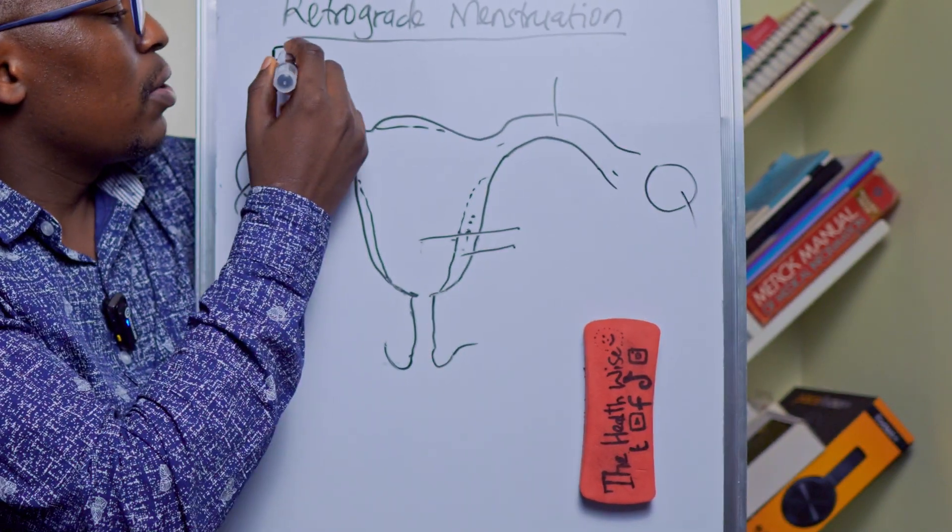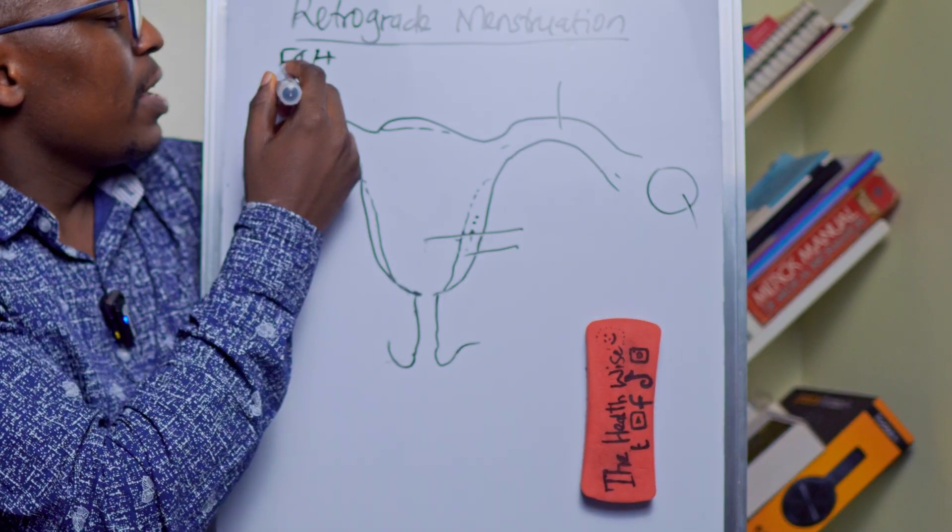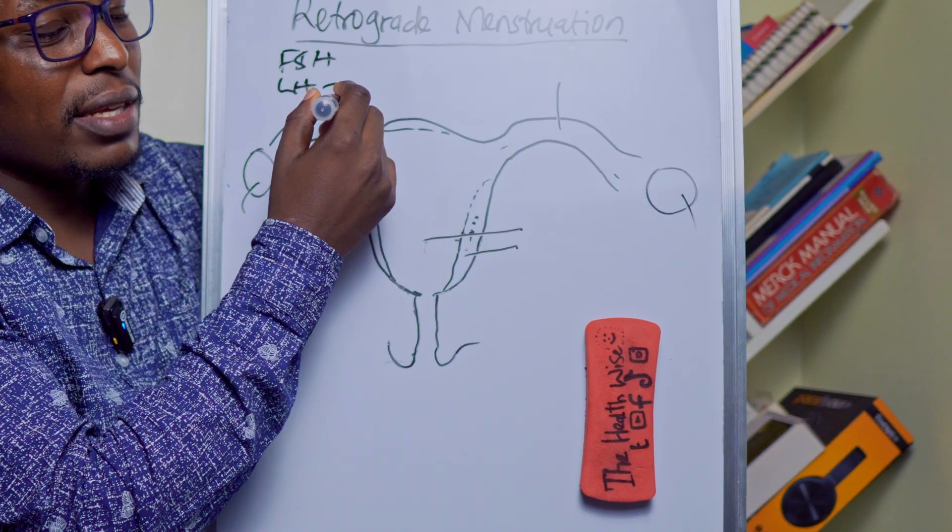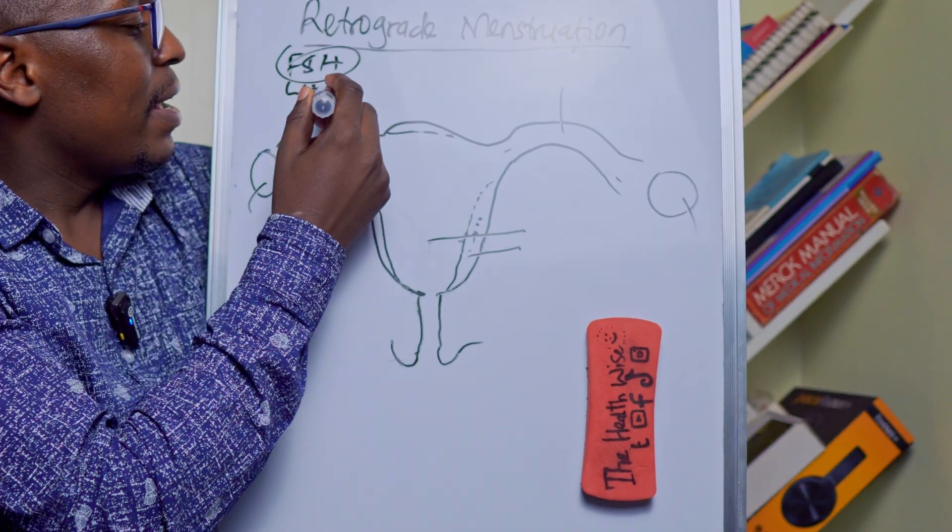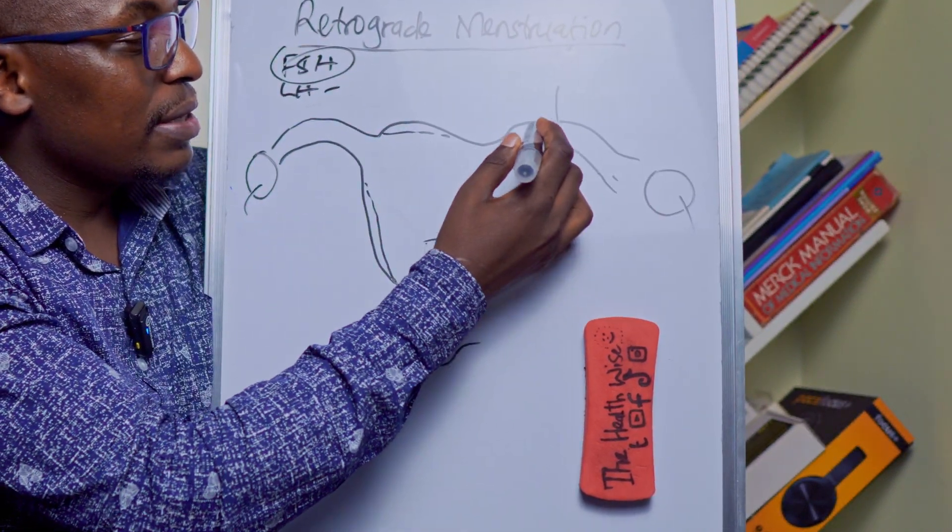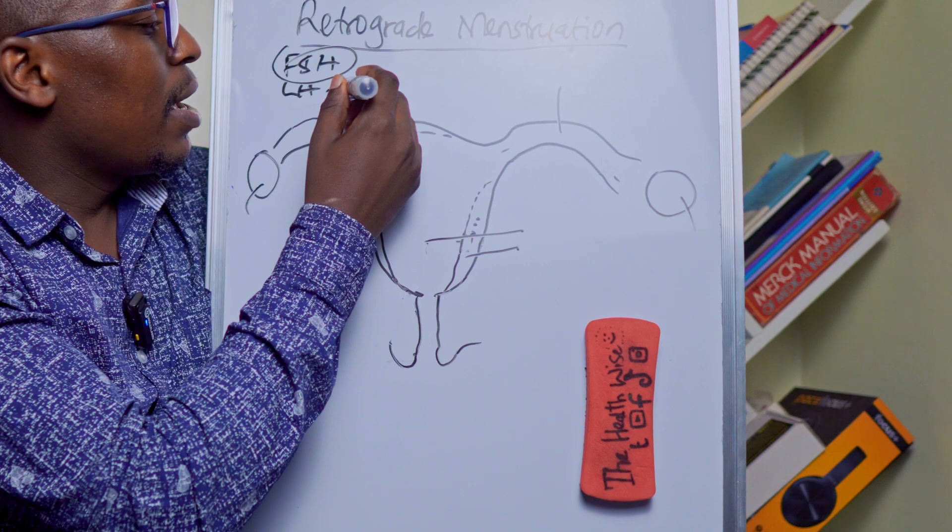You have follicle stimulating hormone and then you have luteinizing hormone. This usually triggers ovulation, this causes maturation of that egg. And then depending on what happens, in case there is fertilization then progesterone will be produced.